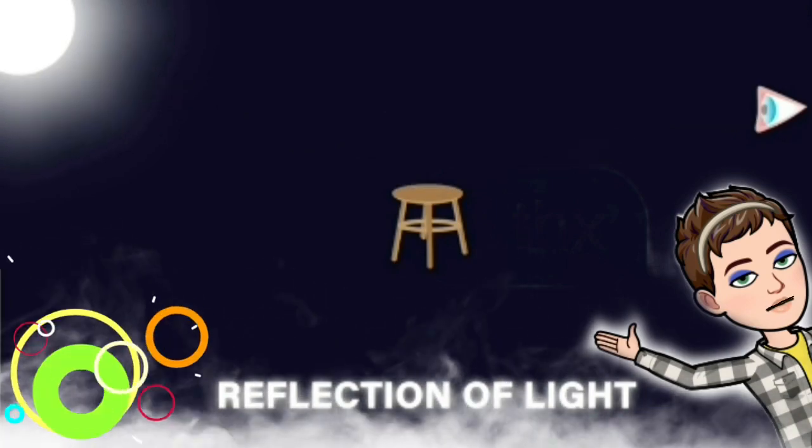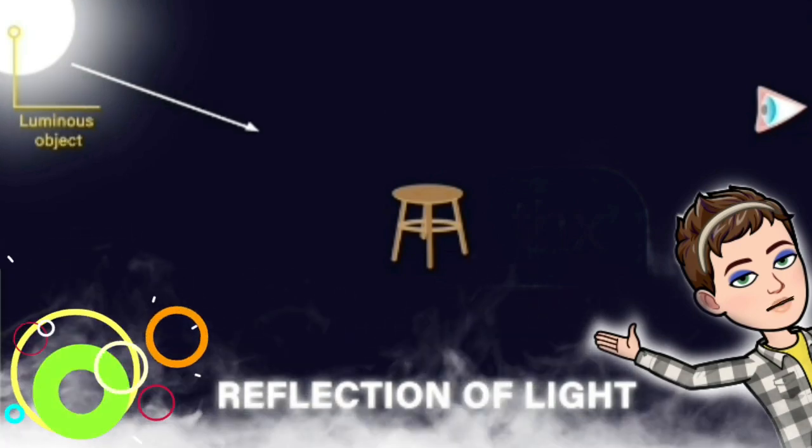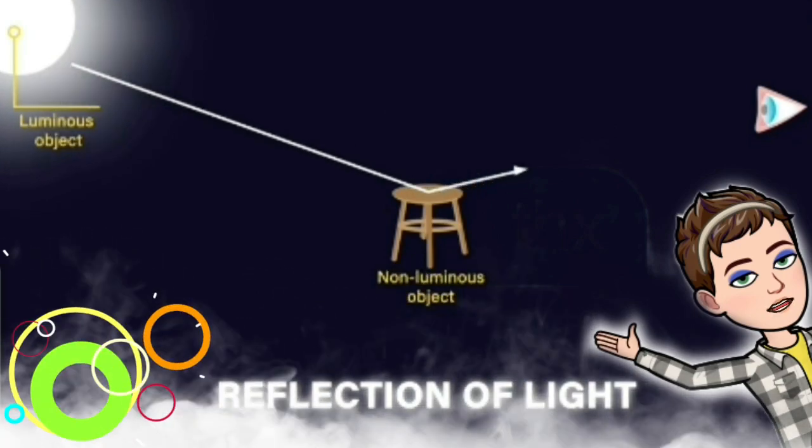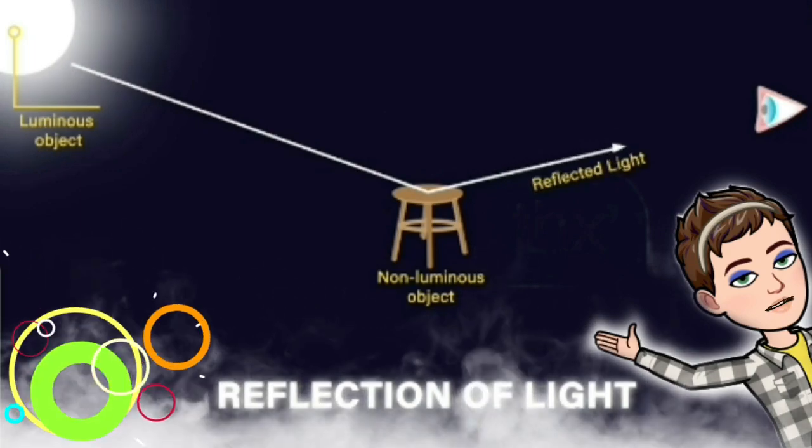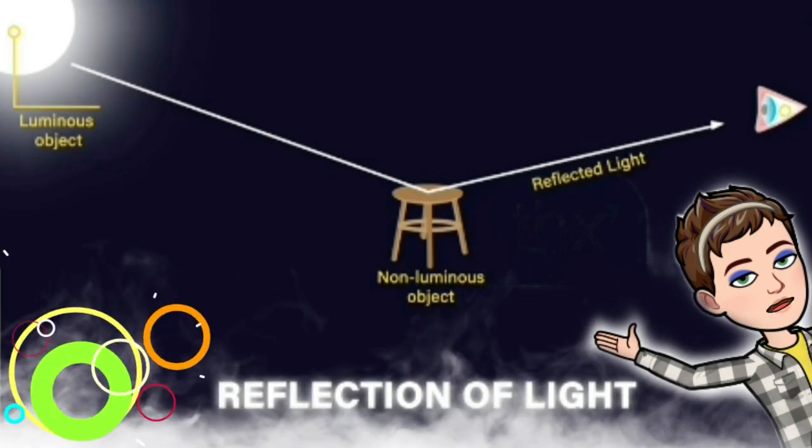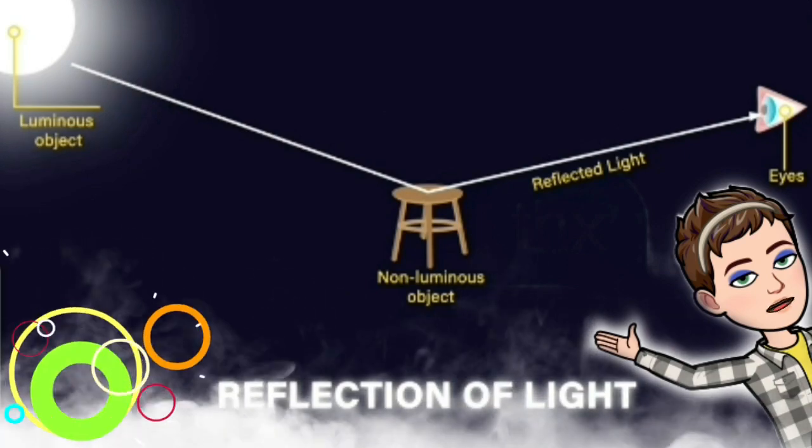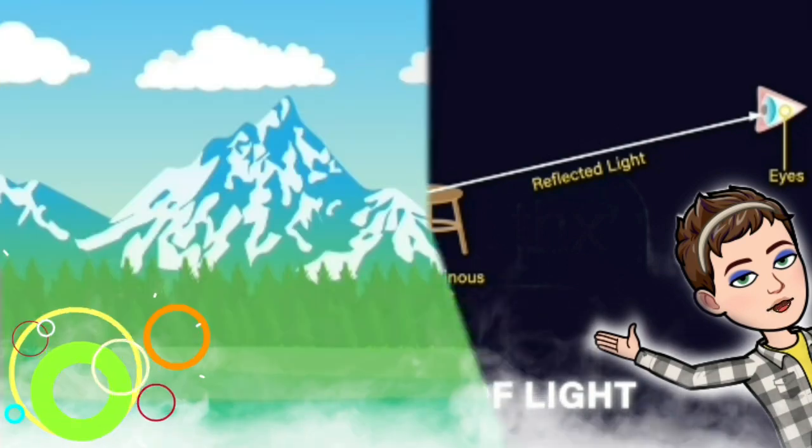Let me repeat. The light coming from the luminous object falls on the non-luminous objects. Non-luminous objects then reflect this light and this reflected light travels towards our eyes. And that is why we see the objects in the daytime.